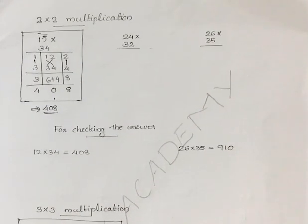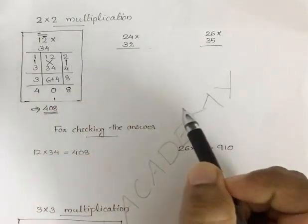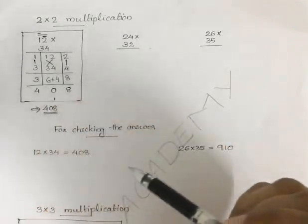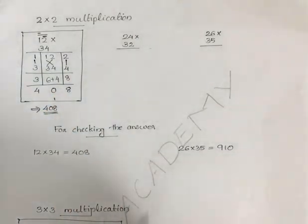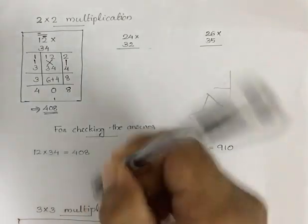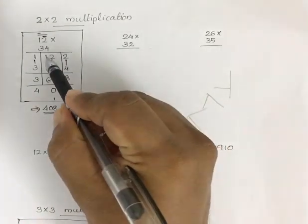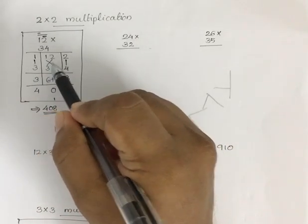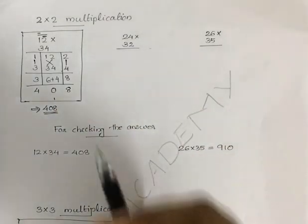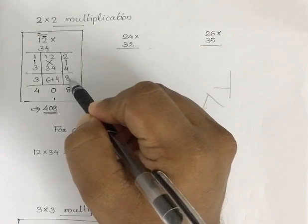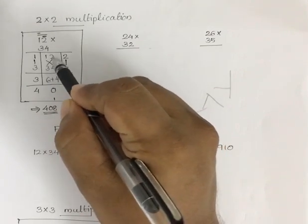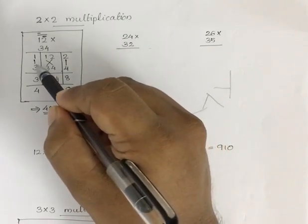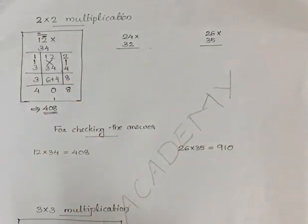Next, we will discuss an important method which is 2-by-2 multiplication — multiplying two two-digit numbers. You multiply and add in columns. For example: 3 into 2 is 6, 1 into 4 is 4, 6 plus 4 is 10 — write 0 and 1 is a carry. Add that carry to the next step: 1, 3, 3 plus 1 is 4.